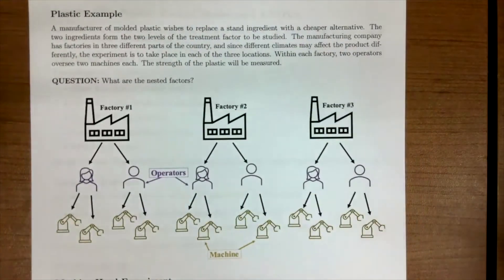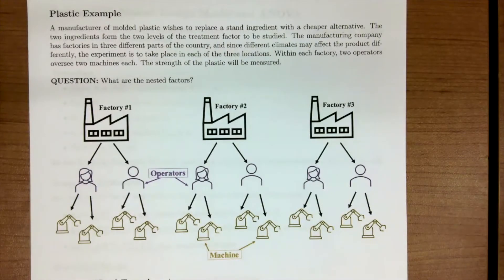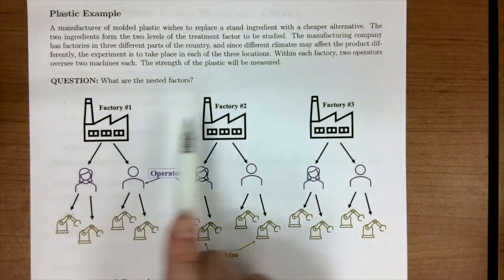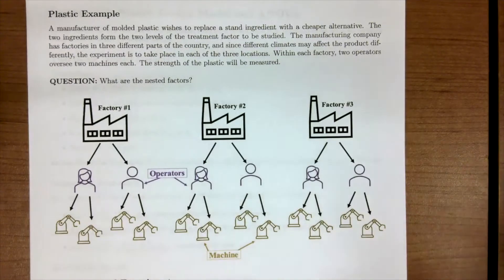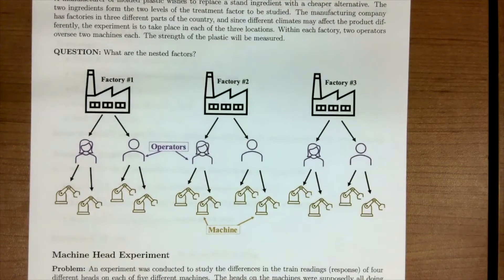We have this example where a manufacturer of molded plastic wishes to replace a strand ingredient with a cheaper alternative. The two ingredients form the two levels of the treatment factor to be studied, so this is a fixed effect. The manufacturing company has factories in three different parts of the country, and since different climates may affect the product differently, the experiment is to take place in each of the three locations. So this factory factor is going to be blocked — this could be Virginia Beach, London, and Napa Valley.